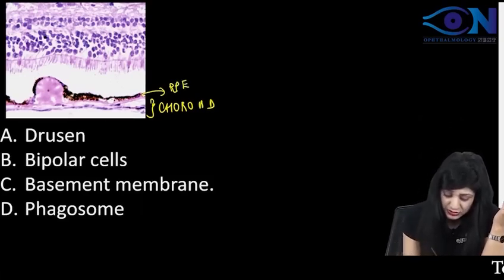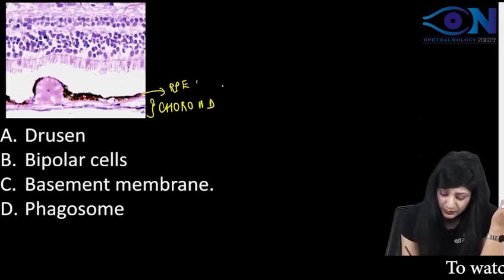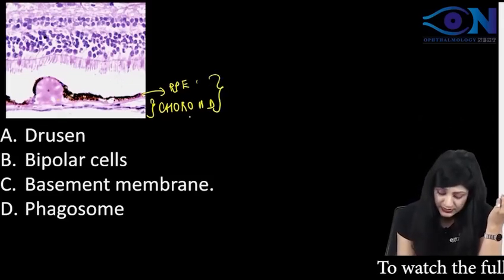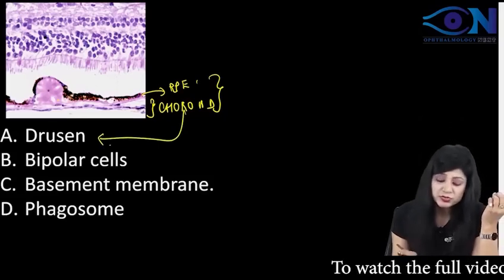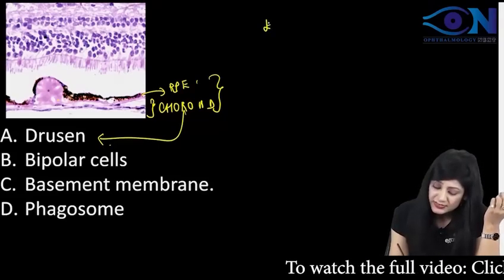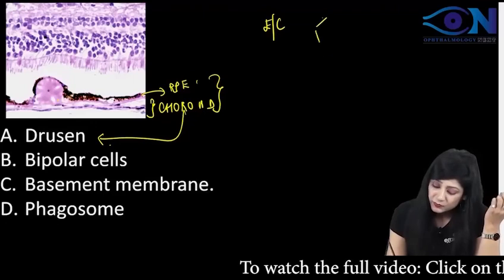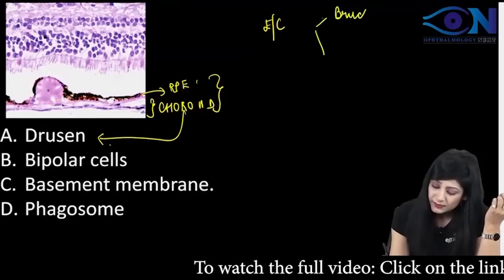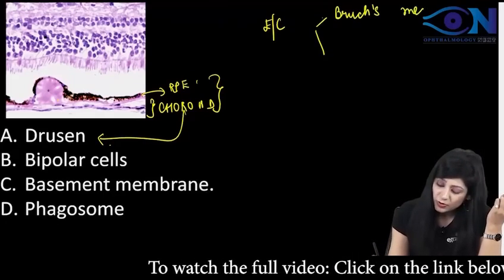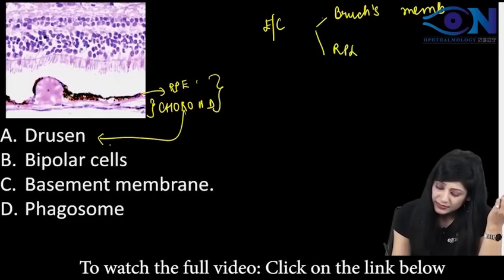So the lesion which is present is between the choroid and the RPE. Therefore, this is actually a drusen because drusen are extracellular deposits between the Bruch's membrane, between the Bruch's membrane of the choroid and the RPE layer.